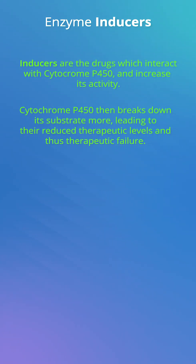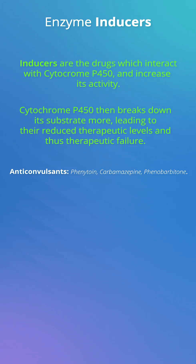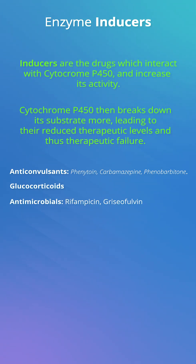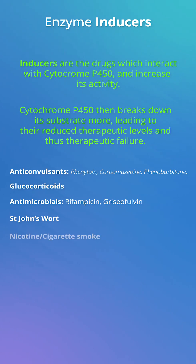Enzyme inducers include anticonvulsants like phenytoin, carbamazepine, and phenobarbitone, glucocorticoids, certain antimicrobials including rifampicin and griseofulvin, St. John's wort which is used for depression, and nicotine and alcohol also induce cytochrome P450.